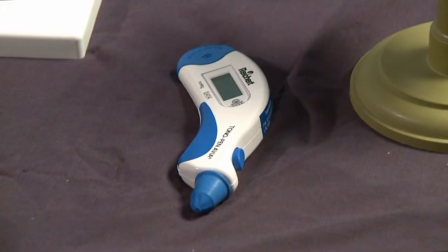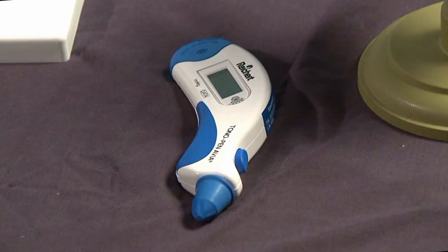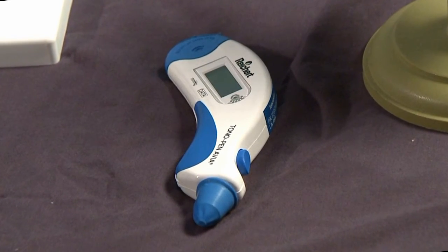Other devices that we have—we use transcranial Doppler now. That's a relatively new device to look at blood flow in the brain. And I think today we're here in particular to learn more about the tonometer.